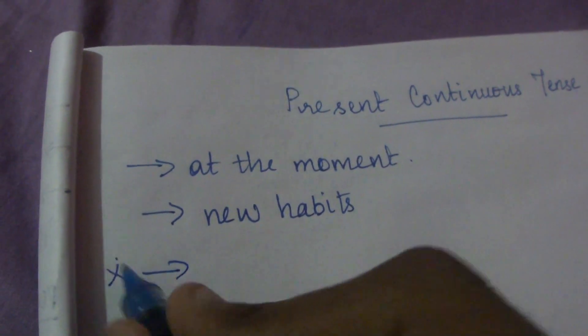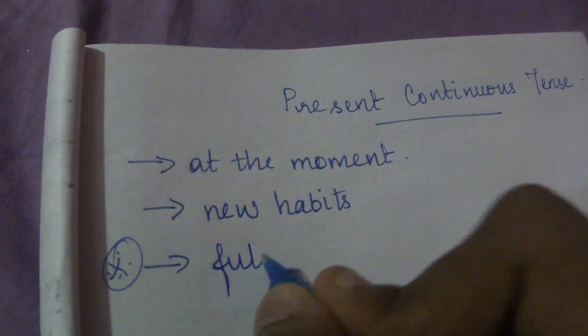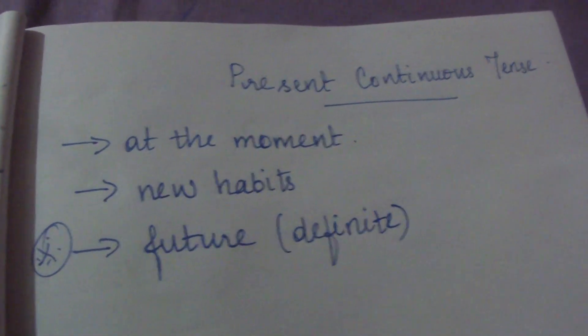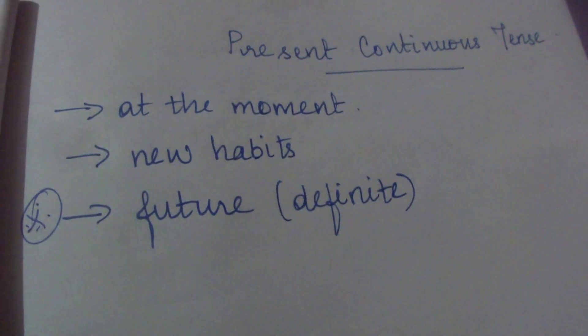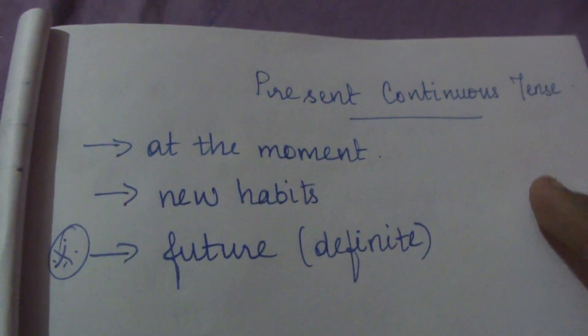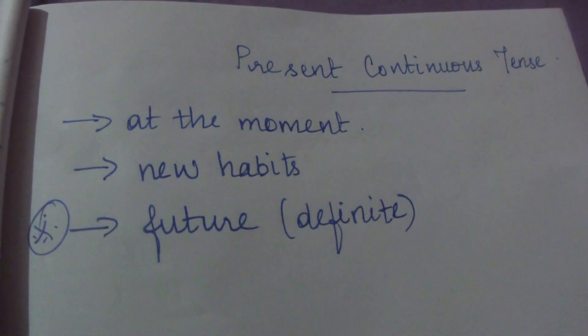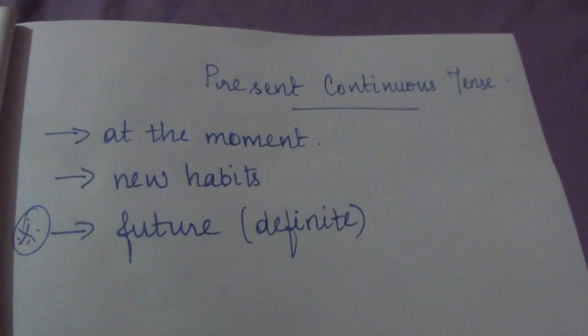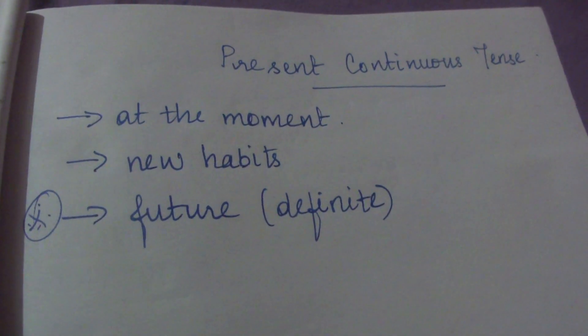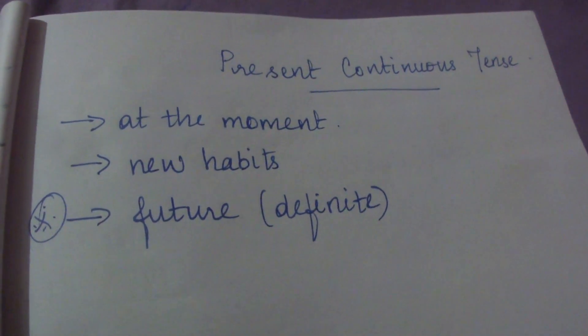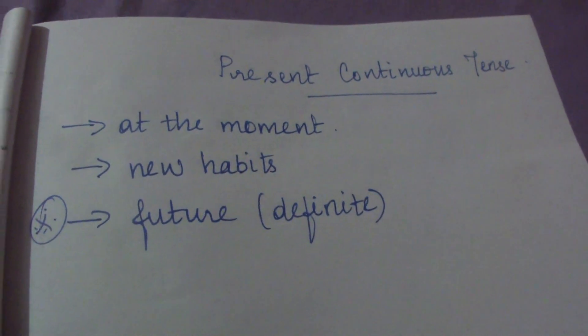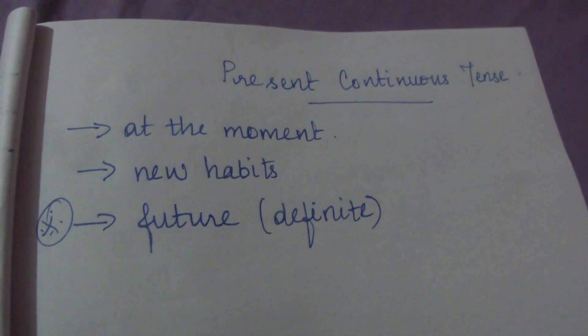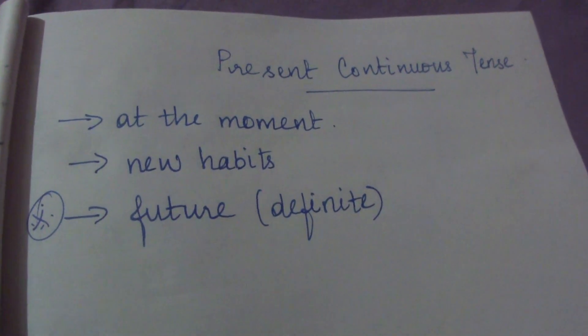And the very important usage of present continuous tense is it can be used with future events which are very definite or which will definitely occur. We can use it with events which will happen in the future for sure. Then we can use present continuous tense. For example, I am going to my father's house tomorrow. It's something which is very sure that I am going to meet my father tomorrow. So I can say I am meeting my father tomorrow. That doesn't mean that I am meeting my father at this moment. As the event of meeting my father tomorrow is very sure, I can write it in present continuous tense as I am meeting my father tomorrow.